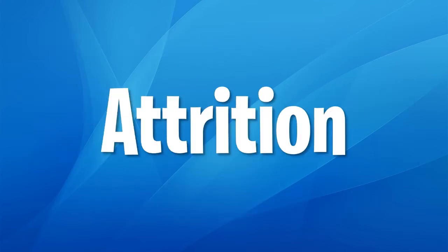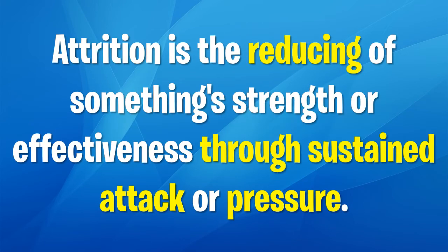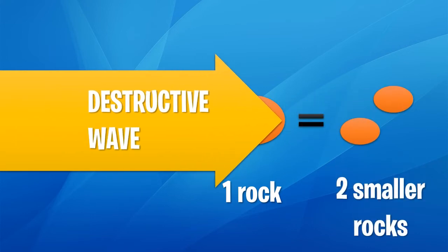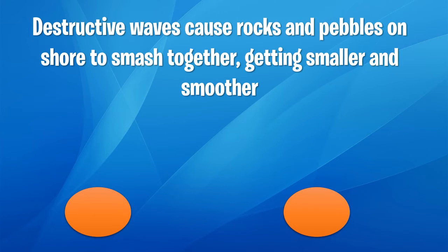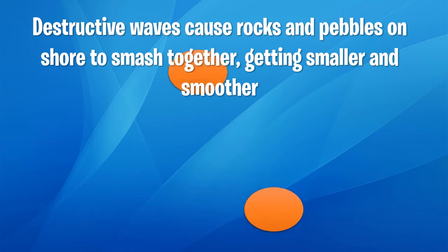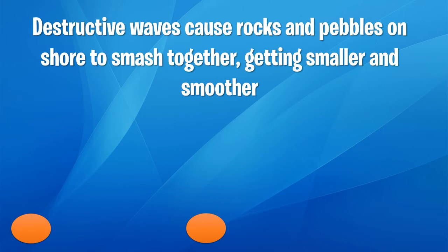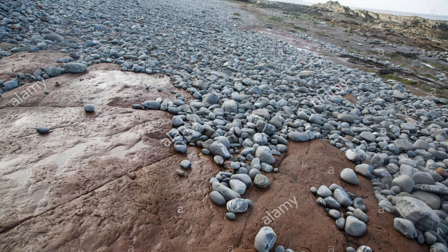Attrition is the reducing of something's strength through sustained attack or pressure. Destructive waves can take one big rock and, through attrition, create two smaller rocks — by causing the rocks and pebbles on the shore to smash together, getting smaller and smoother. Rock polishing kits are essentially this in a controlled setting, doing in days what takes months naturally. The result of attrition is that rocks become surprisingly smooth because destructive waves rub them against each other continuously.